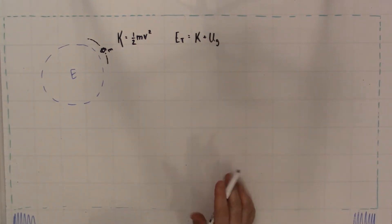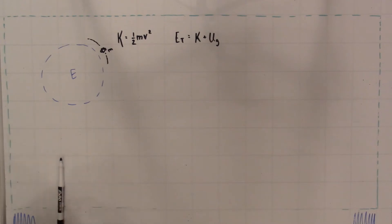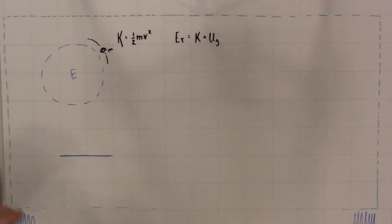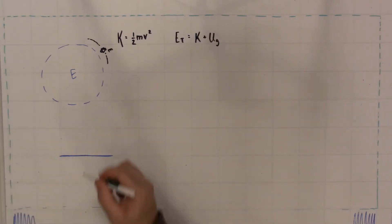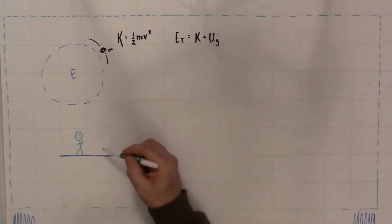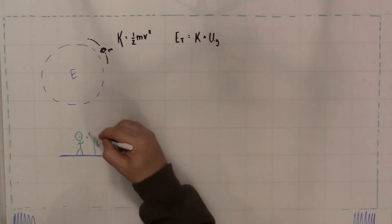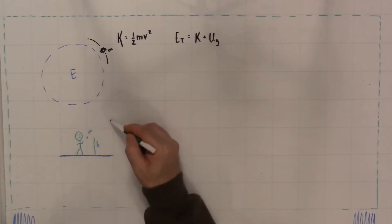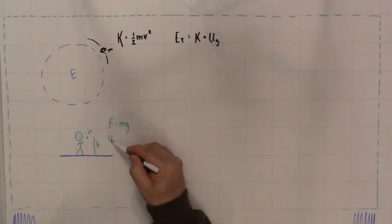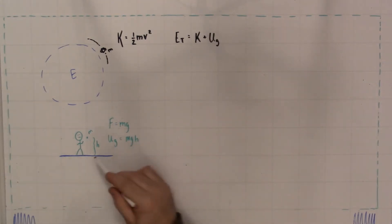The problem is that gravitational potential energy is different once you get off the planet — it's no longer constant. When you're near the surface of the Earth and you throw a ball to a height h, the force on the ball equals mg (the Earth pulling it down), and the gravitational potential energy equals mgh, where h is the height above the ground.